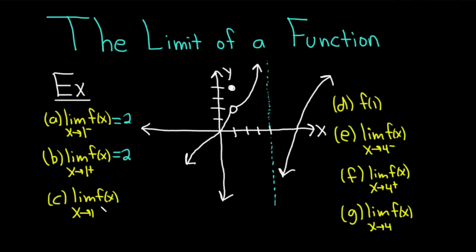Part c: we want the limit of f of x as x approaches 1. This time no direction is indicated, so it's a two-sided limit. If the one-sided limits are the same, that value is the answer. In this case they are both 2, so the answer is 2. If those numbers were different, the answer would be does not exist.